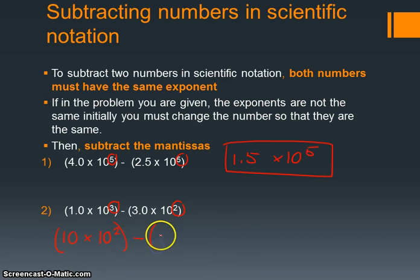Now I've got two exponents that match, so I can simply subtract these mantissas. I get 7 times 10 to the 2nd. If you needed this reported with the same number of significant digits, it would be 7.0 times 10 to the 2nd.